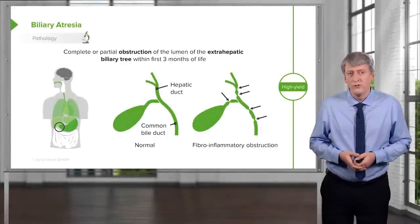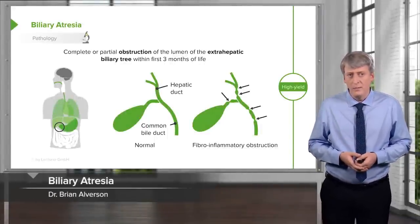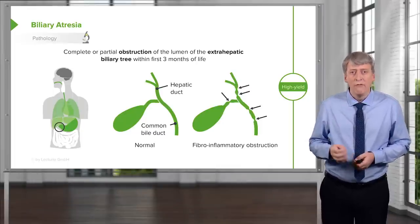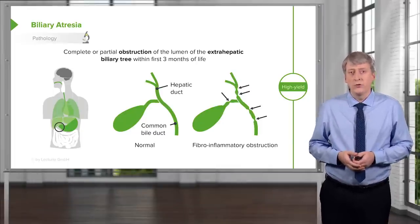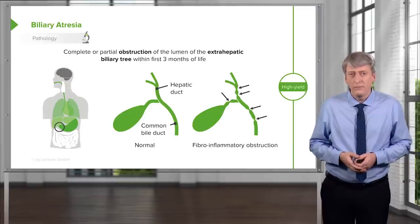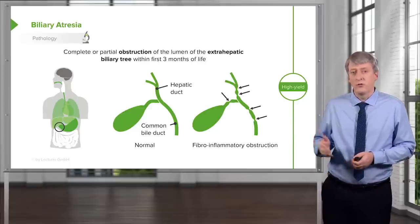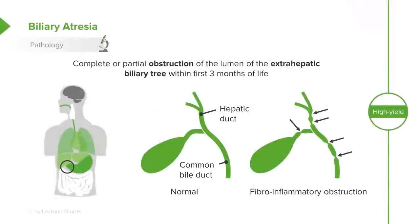Let's move on to another cause of congenital hyperbilirubinemia, which is biliary atresia. This is a complete or partial obstruction of the lumen of the extrahepatic biliary tree within the first three months of life. This is not an intrahepatic problem — it's an extrahepatic problem. Typically, as you can see on the left side of your slide, there is inflammation along the biliary tree with a chain of lakes phenomenon, where there are multiple constrictions of the biliary tract.